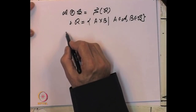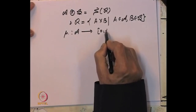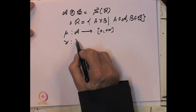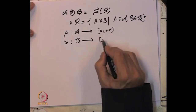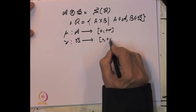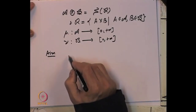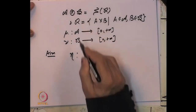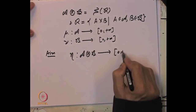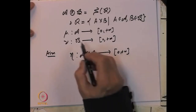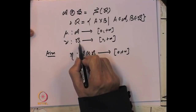Our aim, the problem, is to define a measure η on the product sigma algebra A⊗B using the measure μ on A and the measure ν on B.